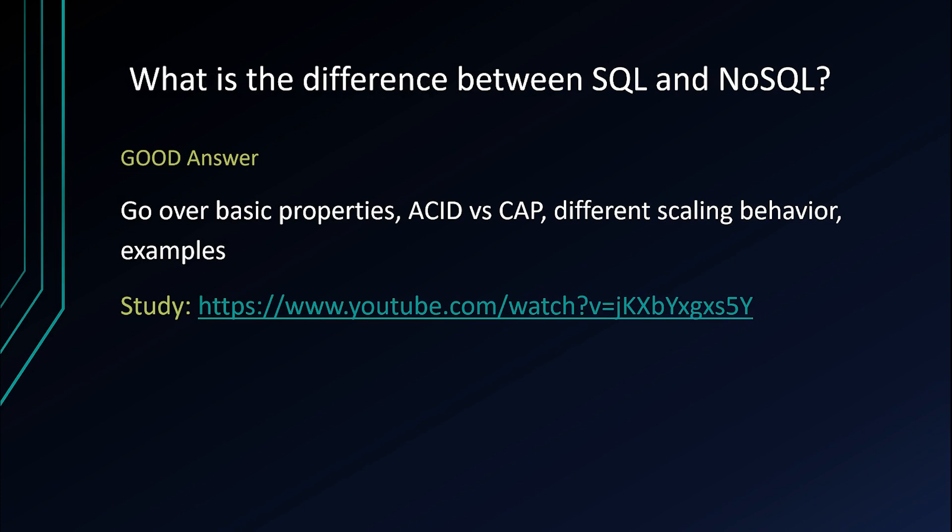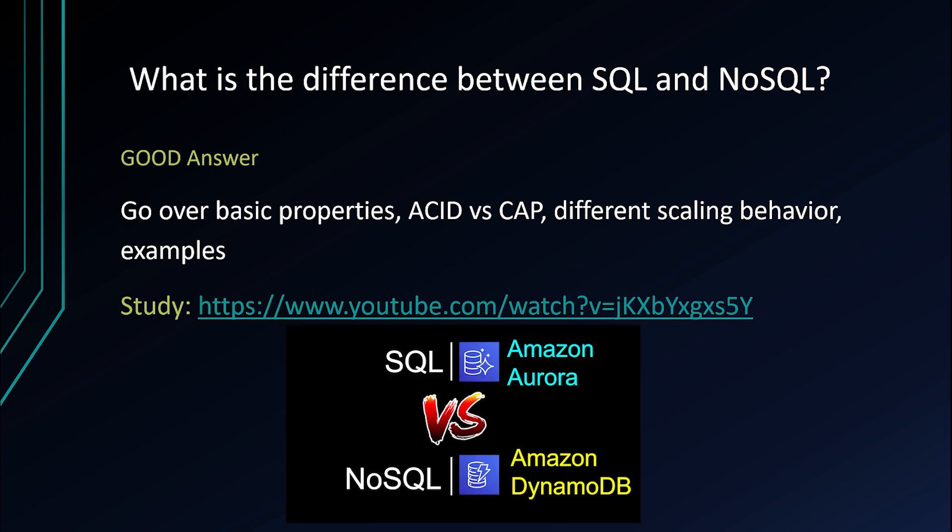A good answer: go over the basic properties. Mention that SQL has a predefined schema and NoSQL doesn't, and explain what that means. Then go over ACID versus CAP, different scaling behavior, use cases, and examples. You can even look up case studies where companies run both SQL and NoSQL effectively — there are a bunch you can Google. There is also a separate video on these exact topics with a link provided.